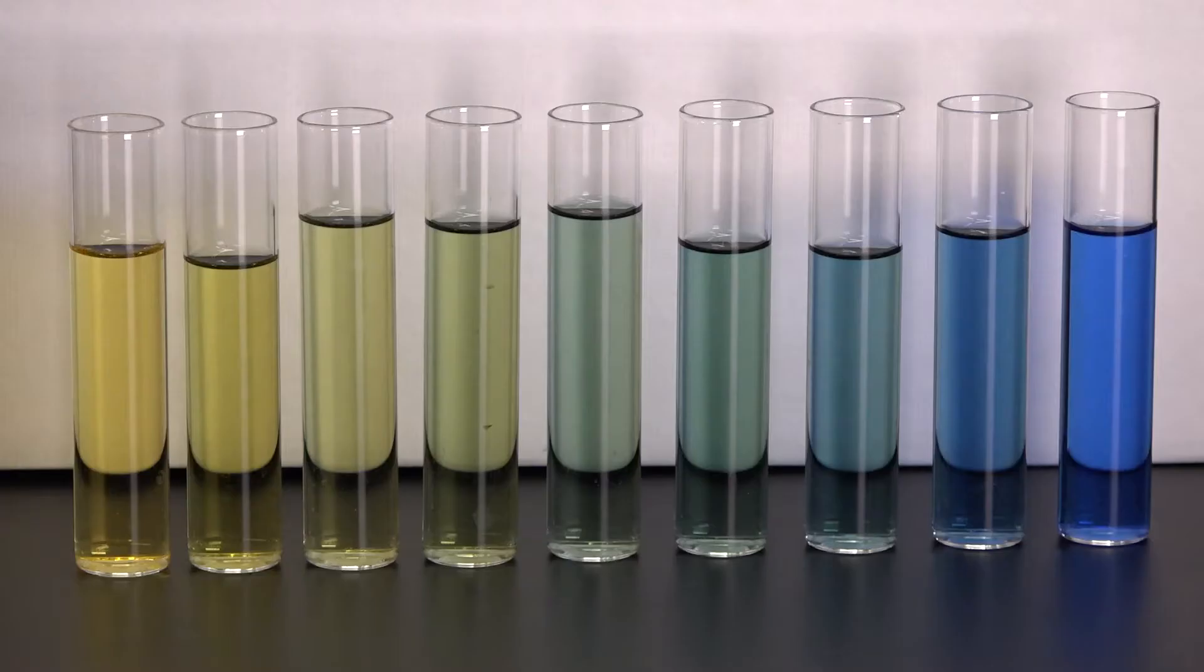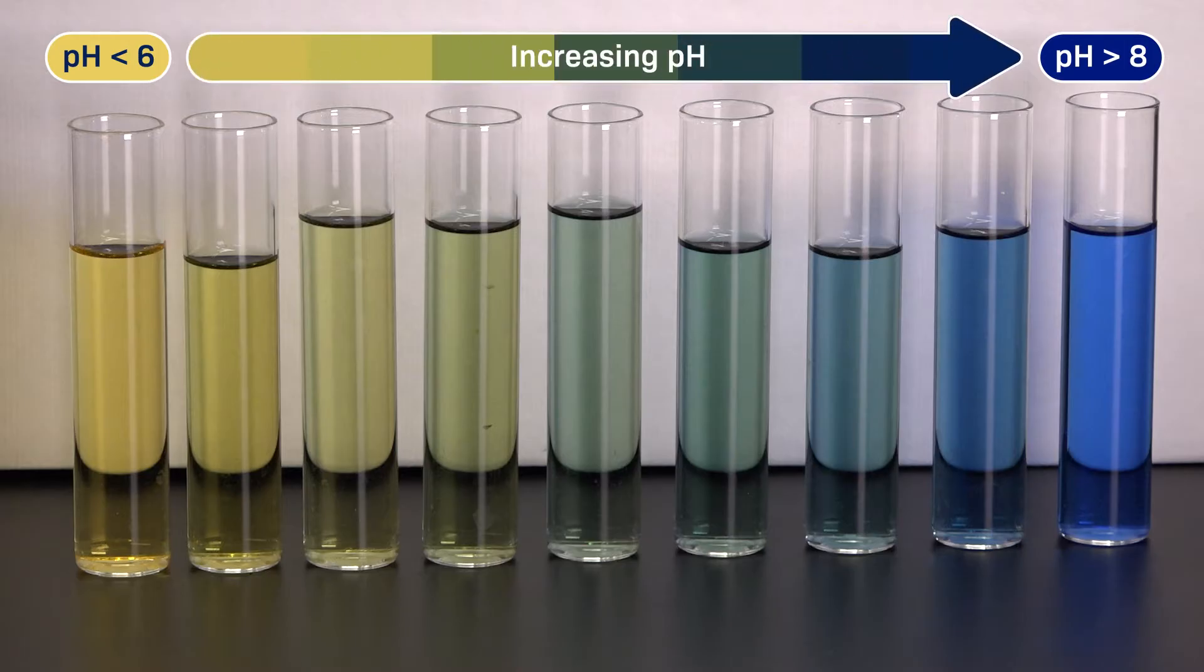At pH values below 6, BTB is yellow. Then, between pH 6 and 8, it goes through a beautiful color change from yellow to green to blue, with each incremental shade representing a slight increase in pH. And then, at pHs above 8, it stays blue.